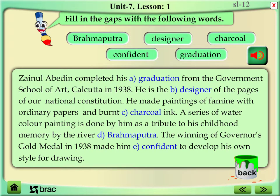Zainul Abidin completed his graduation from the Government School of Art, Calcutta, in 1938. He is the designer of the pages of our national constitution. He made paintings of famine with ordinary paper and burnt charcoal ink. A series of watercolour paintings was done by him as a tribute to his childhood memory by the river Brahmaputra. Winning the Governor's Gold Medal in 1938 made him confident to develop his own style of drawing.